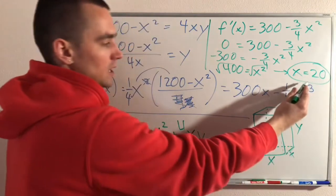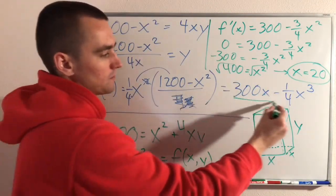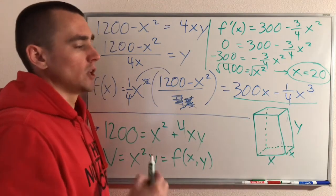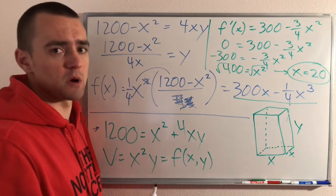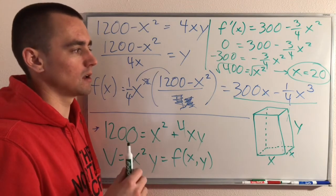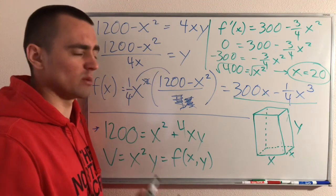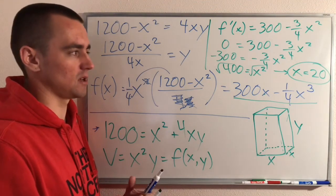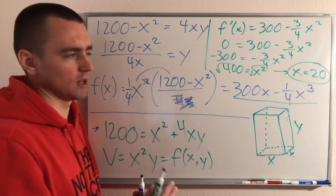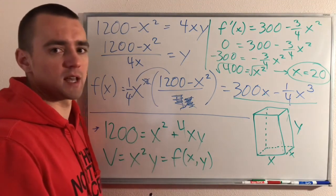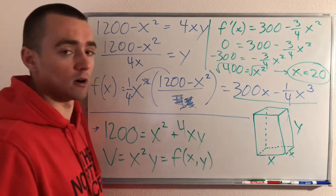So we know x equals 20 is the critical number of this function f(x). We could go through a handful of different tests to determine if that's a maximum or a minimum, but since it's the only critical number of this function, it's almost certainly the number we're looking for. And if you did run those tests, you would find that this is indeed where our maximum occurs.